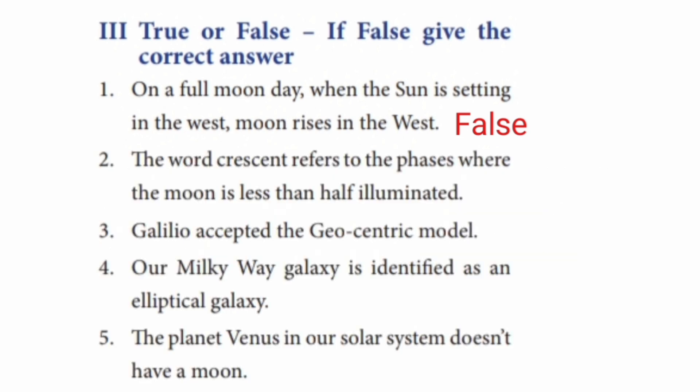Question 12: The word 'Crescent' refers to the phases where the Moon is less than half illuminated — this is True. Question 13: Galileo accepted the Geocentric model — this is False.